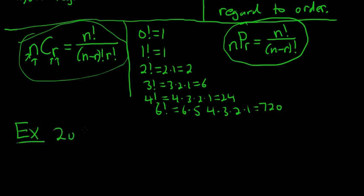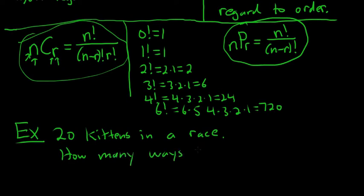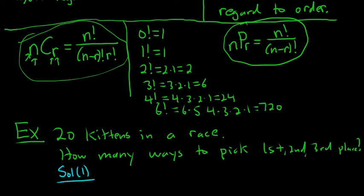Say we have 20 kittens in a race. Not sure how that can happen, but let's say there's a kitten competition. How many ways to pick first, second, and third place in this kitten race, which is very important.